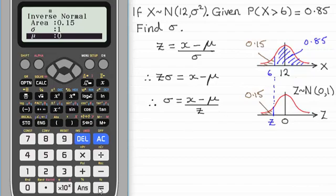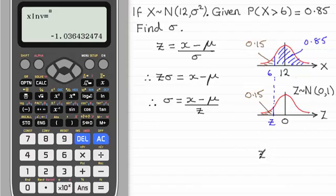So just press equals and we've got the z value of minus 1.0364. I'll just jot that in here. So we've got z equals minus 1.0364 and so on.